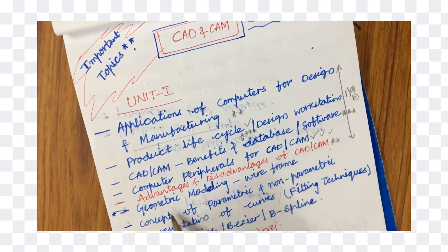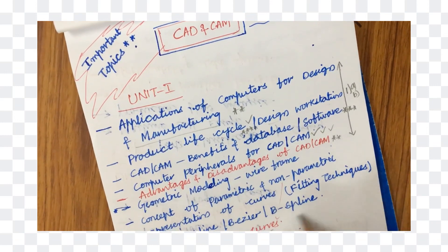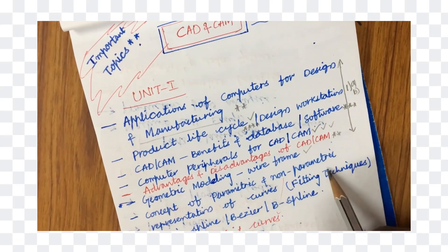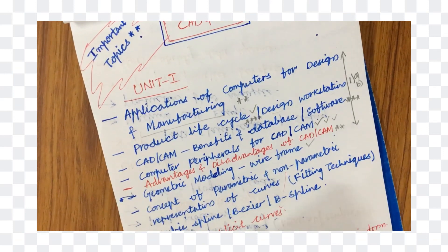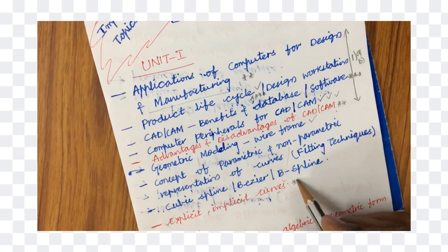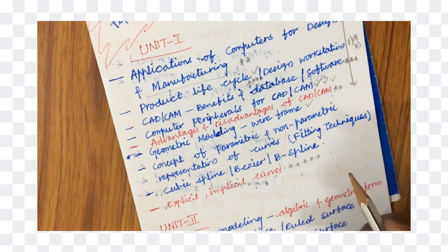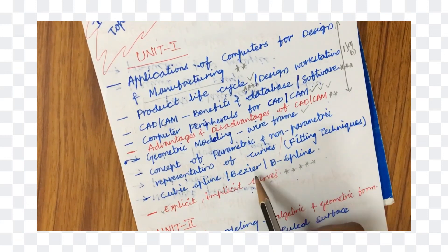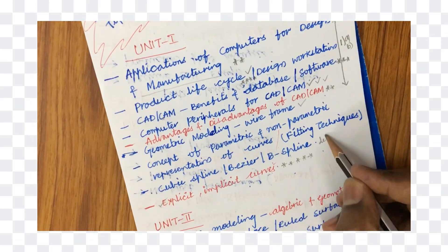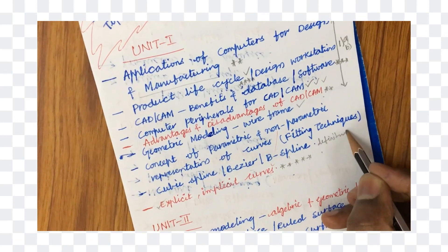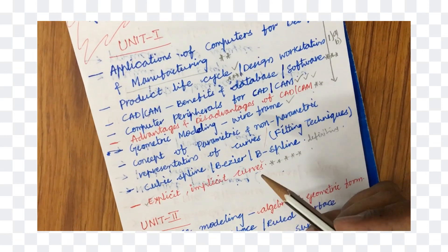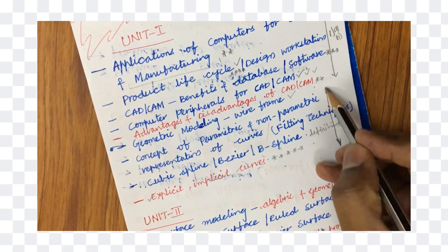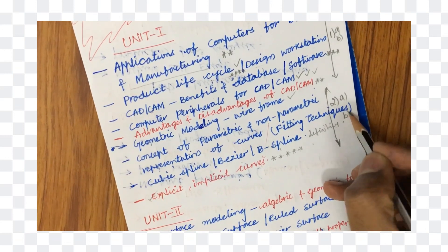The second question is from geometric modeling, where you are supposed to work out each and every parameter — wireframe modeling, concepts of parametric and non-parametric as well as explicit and implicit curves related to non-parametric curves. Representation of curves, fitting techniques, cubic spline, Bezier, and B-spline definitions may be asked from unit 1. We can expect the second question as 2A and 2B.